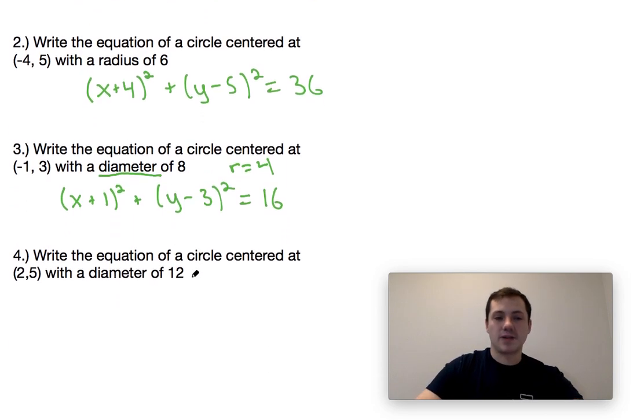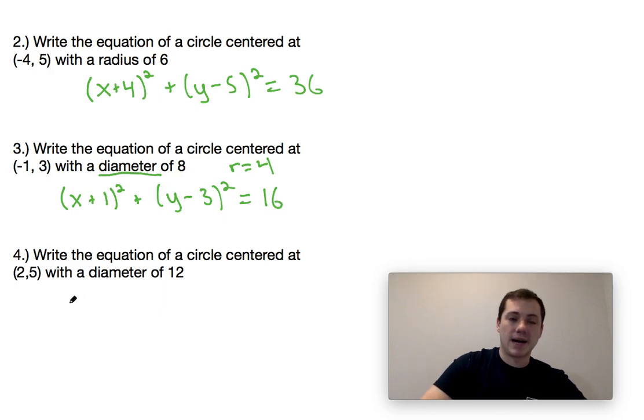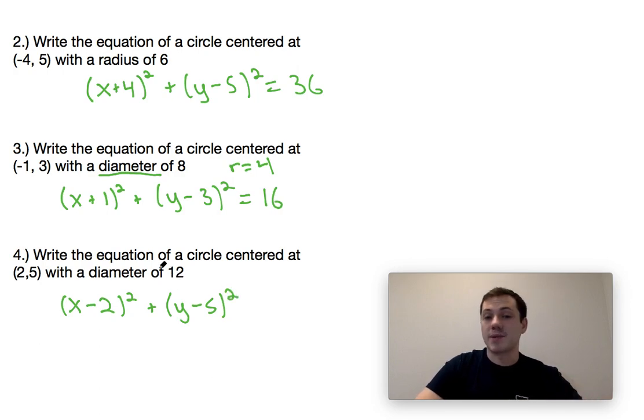And finally for problem four, it would be x minus two squared plus y minus five squared. Again, they say the diameter is 12. Watch out for that. It's really easy to think that that's the radius, but the radius is in fact going to be six, and so six squared would give us 36.